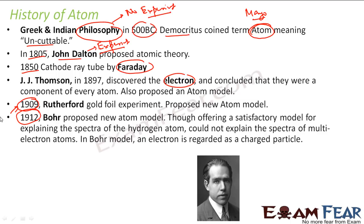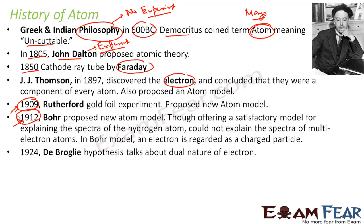Then in 1912, Bohr proposed a model. Please note, all these models are not correct. Bohr's model could answer a lot of questions, but this model is still not appropriate. When Bohr proposed this model in 1912, he assumed that electrons are just charged particles. We'll explain in the next slides that electrons are not only particles — they are dual in nature. They have both wave properties and particle properties.